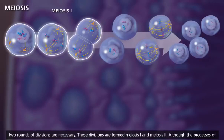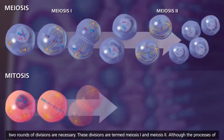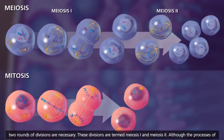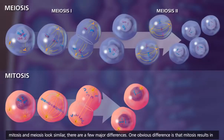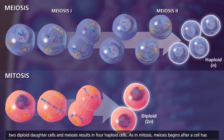These divisions are termed meiosis I and meiosis II. Although the processes of mitosis and meiosis look similar, there are a few major differences. One obvious difference is that mitosis results in two diploid daughter cells, and meiosis results in four haploid cells.